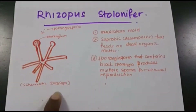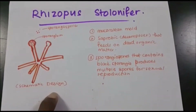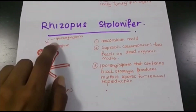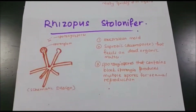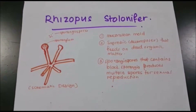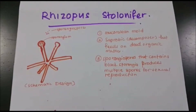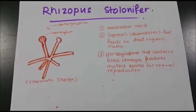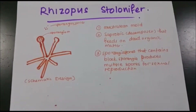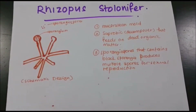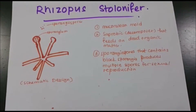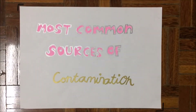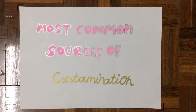This is a schematic design for Rhizopus stolonifer. It has sporangia that produces sporangiospores. It is known as a mucoralean mold that is saprotrophic, meaning it is a decomposer that feeds on dead organic matter. Sporangia containing black sporangia produce multiple spores for sexual reproduction.